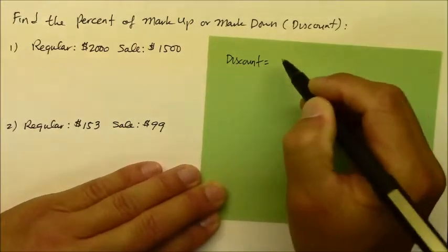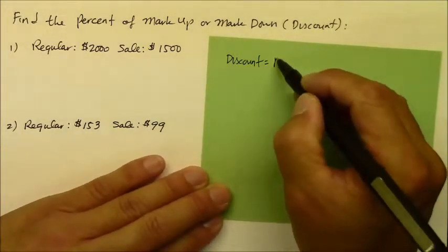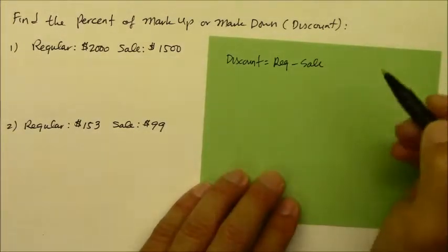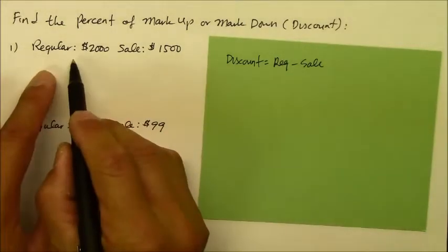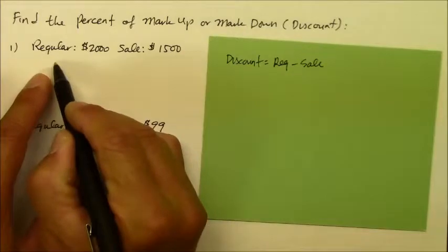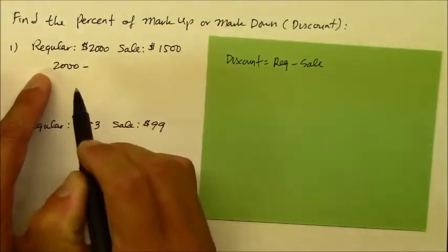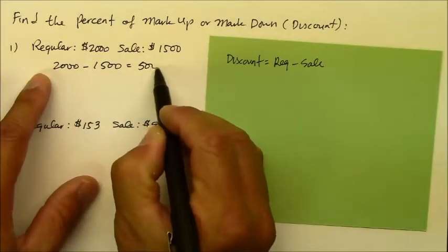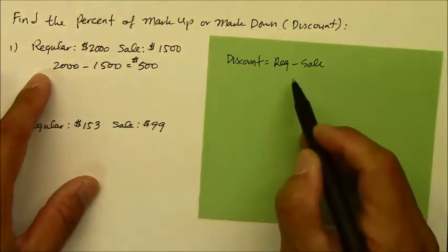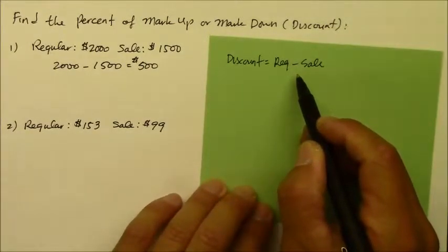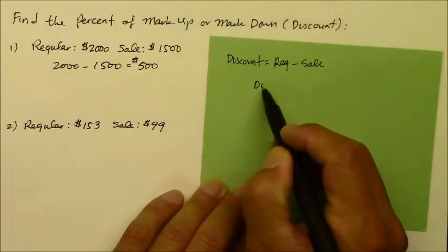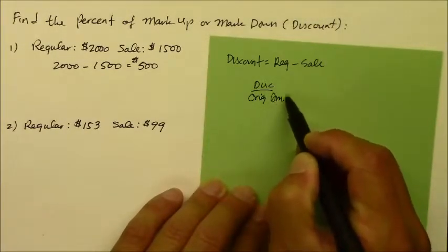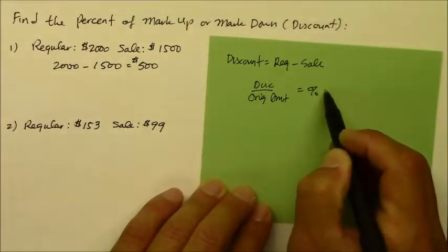So in this case, the discount is regular price, which was $2,000, minus the sale price, which is $1,500. So the actual discount is $500. That's a huge discount. Then you take the discount amount and divide that by the original base, the original amount. And that will give you the percent discount.